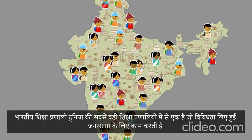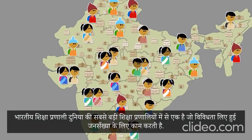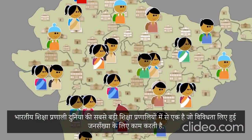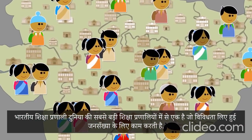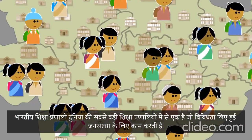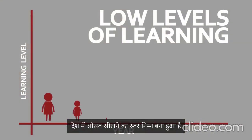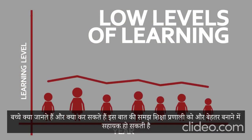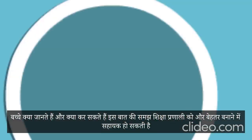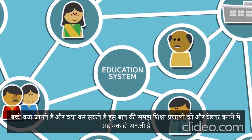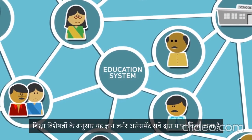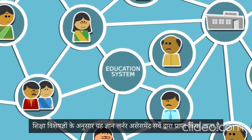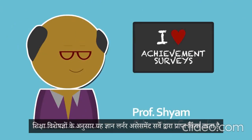India has one of the largest school education systems in the world, serving a very diverse population. But the average learning levels across the country continue to remain low. Understanding what students know and can do will help to plan and take steps to improve the education system, according to education specialists like Professor Sham. This knowledge comes from learner assessment surveys.